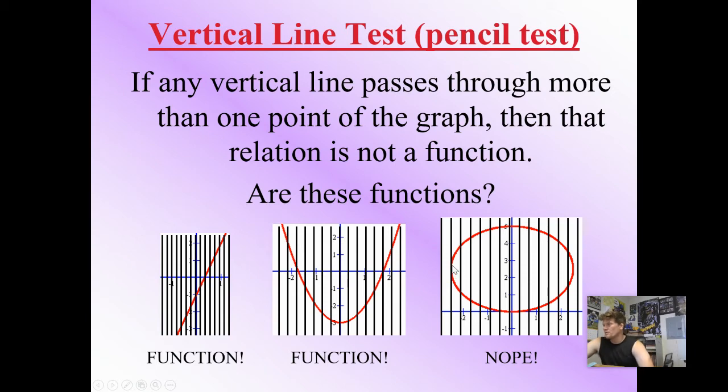Now, you could argue it only hits once because this line right here only hits once. But guys, in any part of your graph, if it hits more than once, it's not a function. So since it hits the top of the circle and the bottom, it hits twice at each point, not a function.